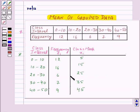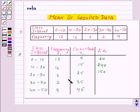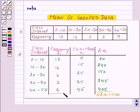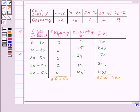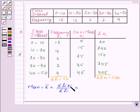Now we will make the column for fi·xi. So here 12 into 5 is 60, 16 into 15 is 240, 6 into 25 is 150, 7 into 35 is 245, and 9 into 45 is 405. So sigma fi·xi is equal to 1100 and sigma fi is equal to 50. So x̄ equals sigma fi·xi upon sigma fi, which gives us 1100 upon 50, which is equal to 22. So our mean is 22.